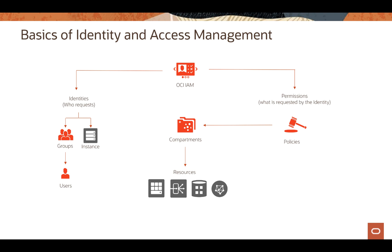Credentials also include customer secret keys for using Amazon S3 compatibility APIs with OCI Object Storage, and SMTP credentials for using the OCI email service. A collection of IAM users who need a similar type of access to a particular set of resources is called a group. There are also dynamic groups and instance principles, which I'll discuss on the next slide.